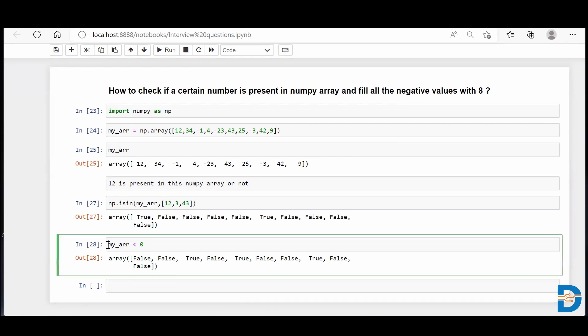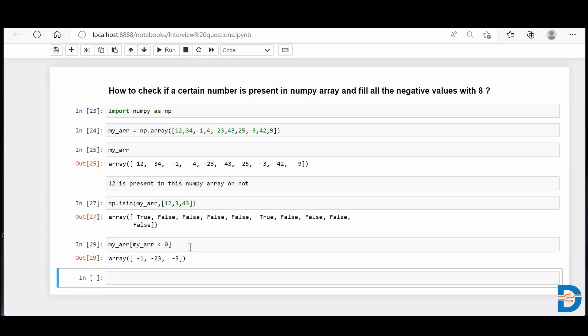Now if I just use this condition and encapsulate this condition with my NumPy array itself, I'll get all those numbers which are less than zero. That is minus 1, minus 23, and minus 3.